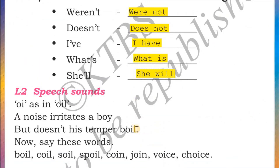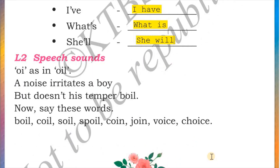Next we have L2 speed sounds: the 'oi' sound as in 'oil.' Example sentence: 'A noise irritates a boy but doesn't his temper boil.' Practice words: boil, coil, soil, spoil, coin, join, voice, and choice. That is the end of the lesson 'Dignity of Labor.' I will see you all in the next video.